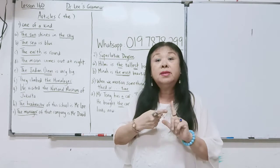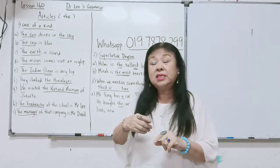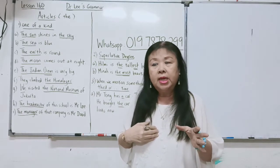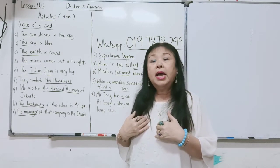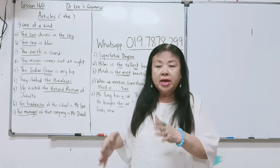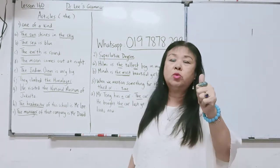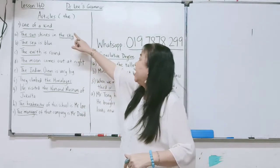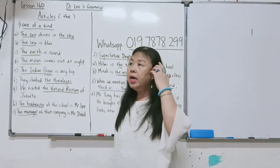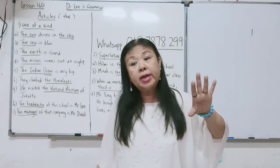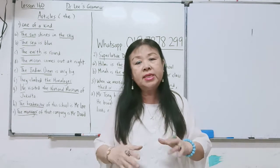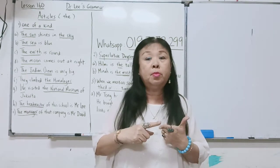E maksudnya satu, N maksudnya satu. Tetapi kita tidak cakap 'one book' atau 'I have one book'. Kita cakap 'I have a book'. Saya tidak cakap 'I have one orange', tapi saya cakap 'I have an orange'. Dari segi bahasa, kita gunakan E dan N. Dan dalam grammar, kita panggilnya artikel. 'One book', 'one pen' itu digunakan untuk matematik, untuk sains. Tapi untuk bahasa, kita kekalkan E ataupun N.